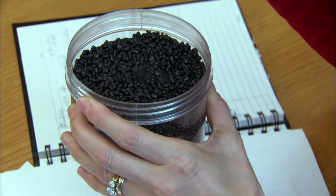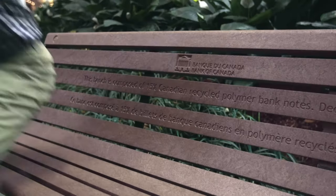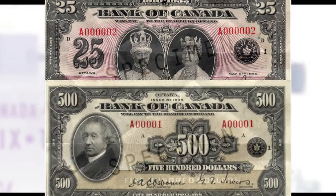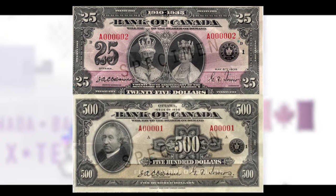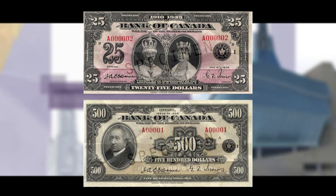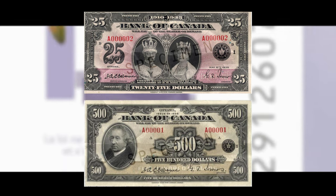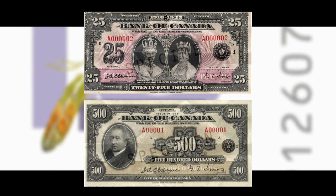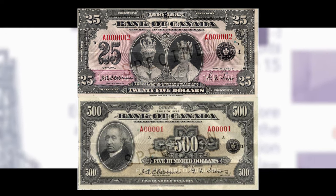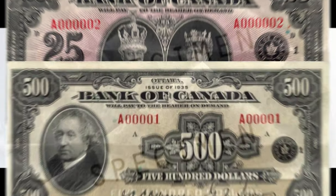Since then, the Canadian Banknote Company has been contracted to produce Canadian notes. The 1935 series of Canadian currency was unique in that it included both $25 and $500 denominations. However, their existence was short-lived. The $25 note was withdrawn from circulation on May 18, 1937, while stacks of unissued 1935 $500 notes were destroyed in February 1938. Issued $500 notes were also recalled and withdrawn from circulation just five months later.